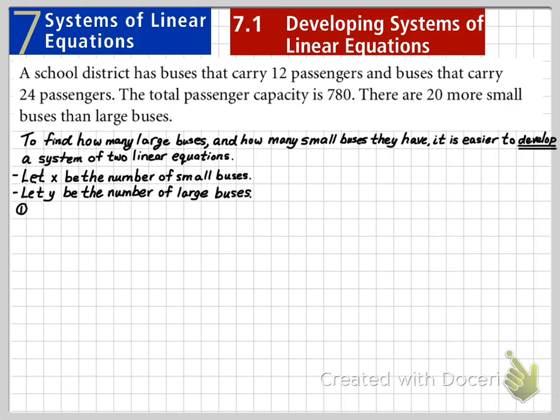We can first say that 12 times the number of small buses plus 24 times the number of large buses is going to equal a total capacity of 780.